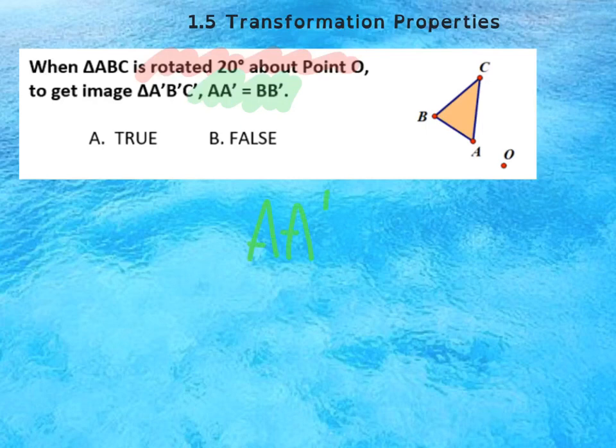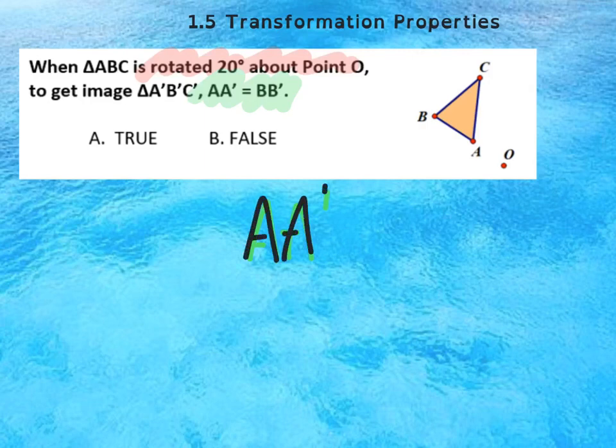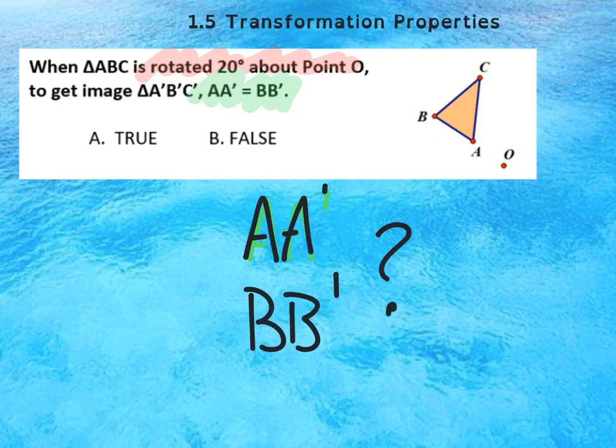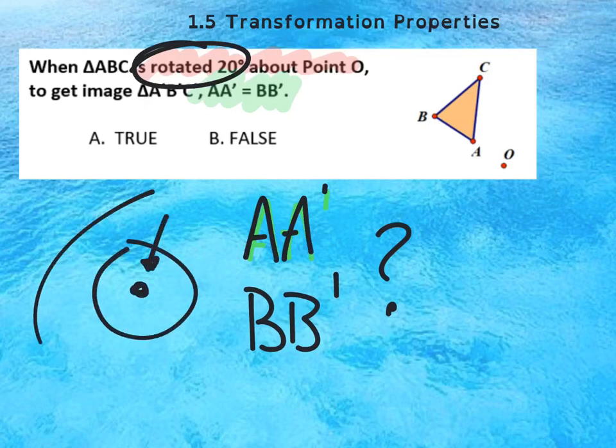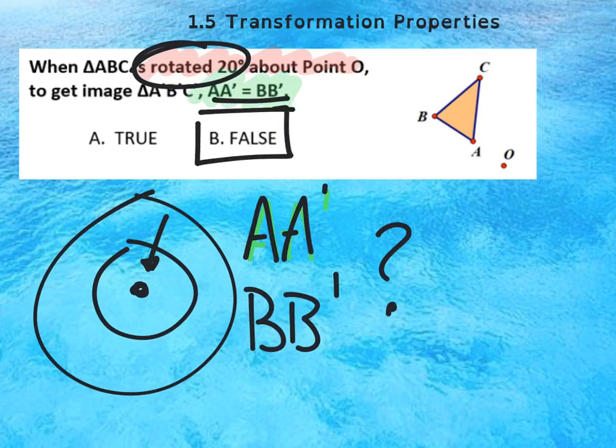They're asking us in particular about the distances from A to A' and B to B'. Are these distances the same? And we know when you do a rotation that the closer you are to the center the smaller distance you go versus the outside, so it is definitely not true.